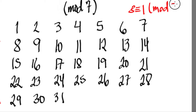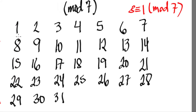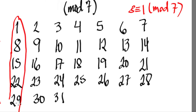We can check: 15 is congruent to 8 because 15 minus 8 is 7. Also, 15 minus 1 is 14. And 22 is congruent to 15, which is congruent to 8, which is congruent to 1, because 22 minus 15 is 7, 22 minus 8 is 14, and 22 minus 1 is 21. So all of the numbers 1, 8, 15, 22, and 29 are congruent with respect to modulo 7.